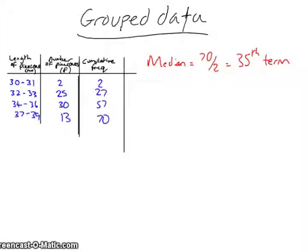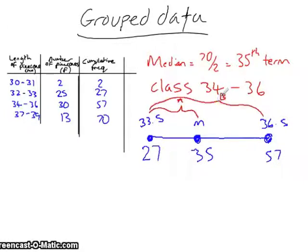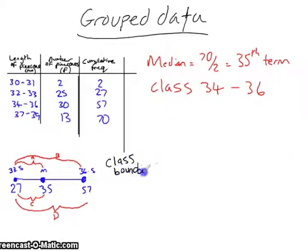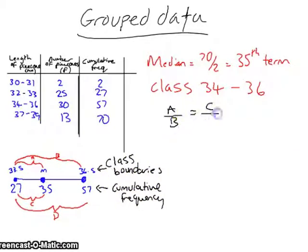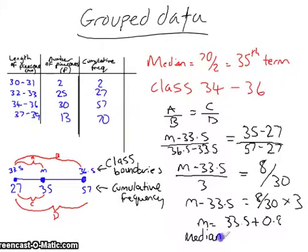Which lies within the class boundaries 34 to 36. For interpolation, it is best to draw a diagram and label it accordingly with the class boundaries on top and the cumulative frequency below. From the diagram, you can clearly see that a over b and c over d are equal. So we sub in the numbers and simplify. We get the median as 34.3.